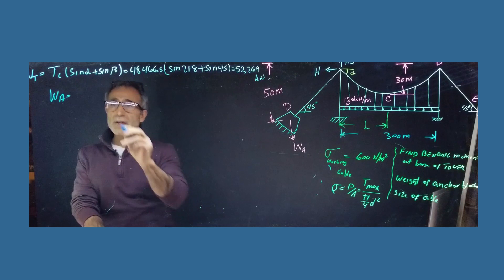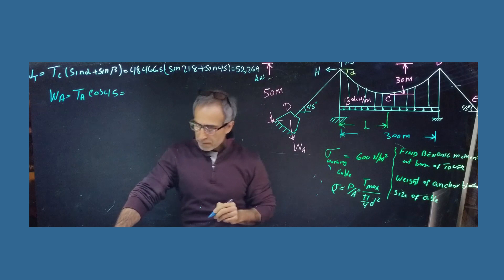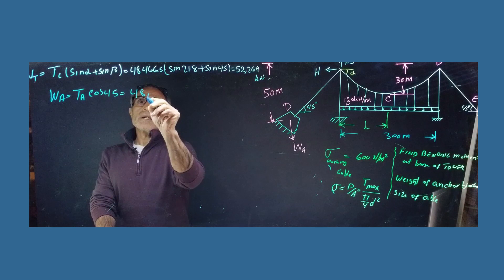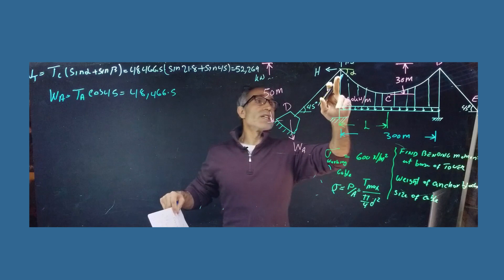And now because of that, we can go ahead and we find the vertical component of that force, you can convert them to a weight. And so WA is going to become, I wonder if we had that on a formula. No, we don't. So that's a vertical component, TA time cosine 45.